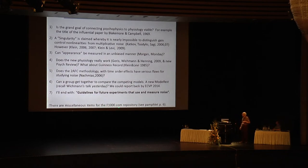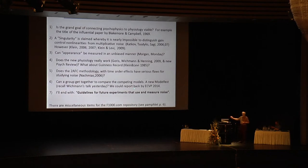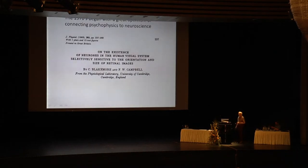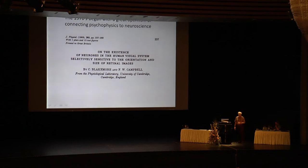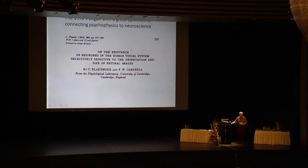Since there's not going to be enough time, I did discover in our pamphlet on page 6 that all the slides will be on some repositories, so if I go too fast you can see it there. Blakemore-Campbell was titled 'On the Existence of Neurons in the Human Visual System,' published in the journal Physiology. This was an audacious idea that one can use psychophysics to learn about the brain. I'm still a believer in that — it is complicated, but that's what our project is.